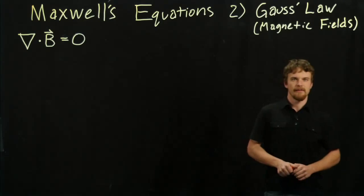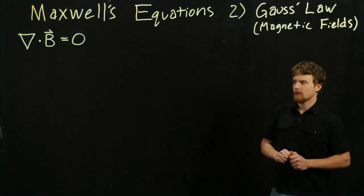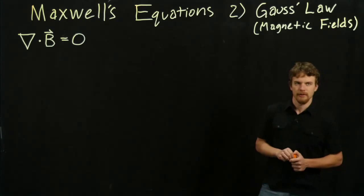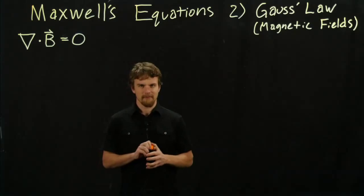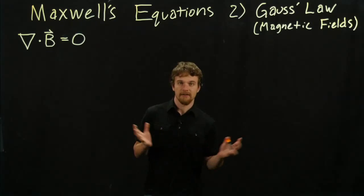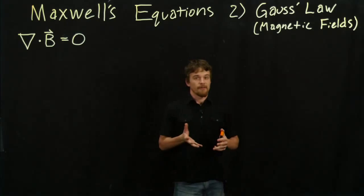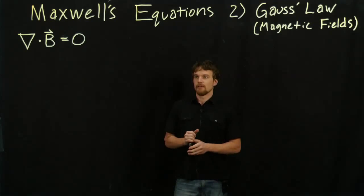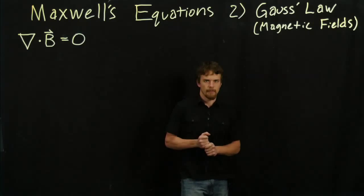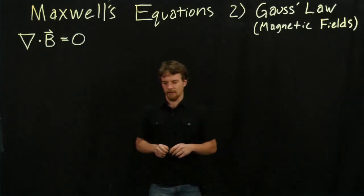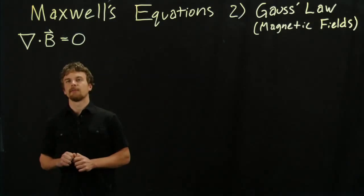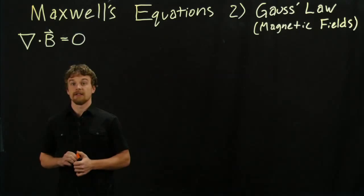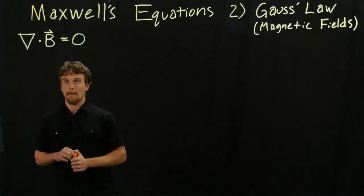Just a brief recap: last week we decided that the flux through any surface, the electric flux through any surface, was equal to the charge enclosed in it divided by a constant called the permittivity of free space.